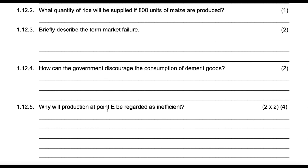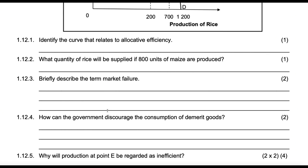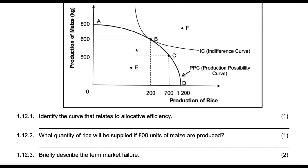Why will production at point E be regarded as inefficient? E is mere laziness. Productively, you have the capacity to produce more, but you just produce less. It's productively inefficient and also allocatively inefficient. There are enough resources to produce at least at point B. So why would you produce E if you can produce B? You can produce E only if you are productively inefficient.